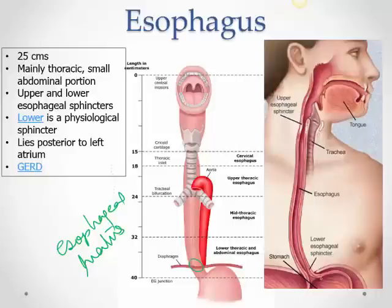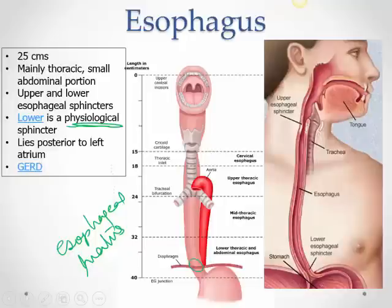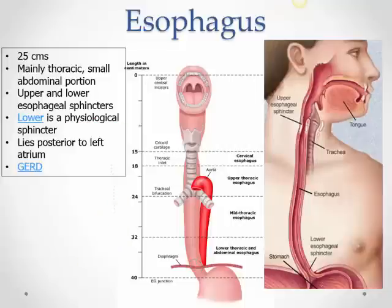The upper esophageal sphincter is anatomical — there is actual circular muscle thickening. The lower esophageal sphincter is physiological, meaning there is no anatomical thickening — it is kept closed by pressure. Normally the pressure in the stomach exceeds that in the esophagus, keeping it closed. As a bolus comes down, pressure builds and the sphincter relaxes to let food into the stomach.